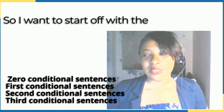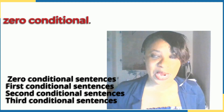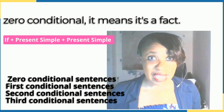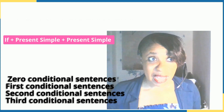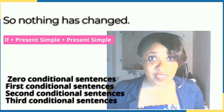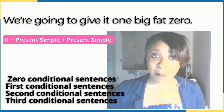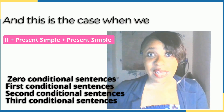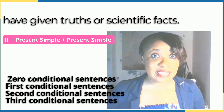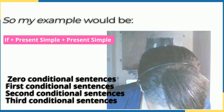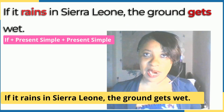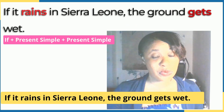I want to start off with the zero conditional. In English, when we talk about the zero conditional, it means it's a fact. If I went to Mars and came back, that would still be a fact — nothing has changed. We're going to give it one big fact: zero. This is the case when we have given truths or scientific facts. My example would be: if it rains, the ground gets wet.